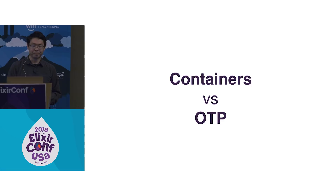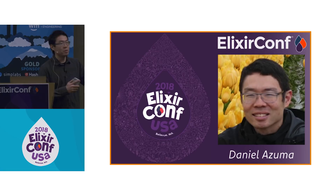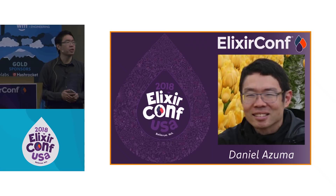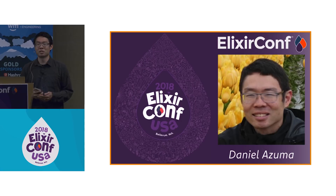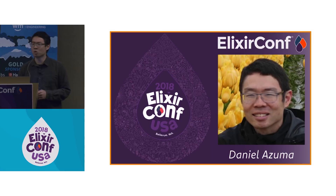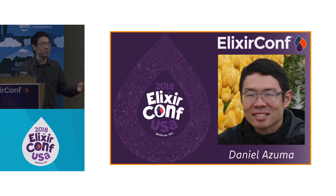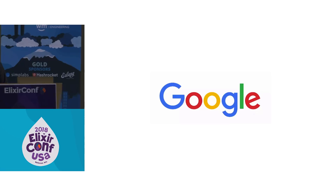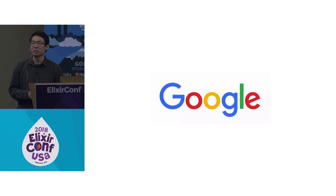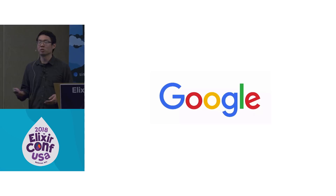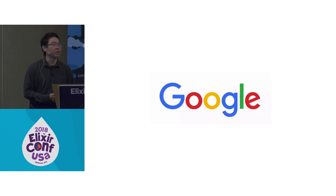Again, my name is Daniel Azuma. I'm a local — I live just a few minutes north in Kirkland, which some of you might recognize is associated with Costco. I work at Google Cloud, the cloud platform organization. I serve as an internal expert consultant on Ruby and on Elixir. Really, my job is to make the cloud better for these languages, for people like you.